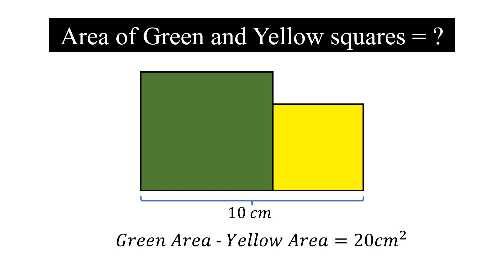The question is: how to find the area of the green and yellow squares if the sum of their sides is 10 cm and the difference between the green area and yellow area is 20 cm²?